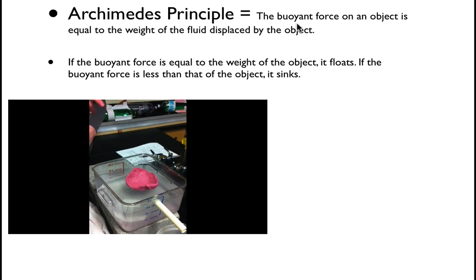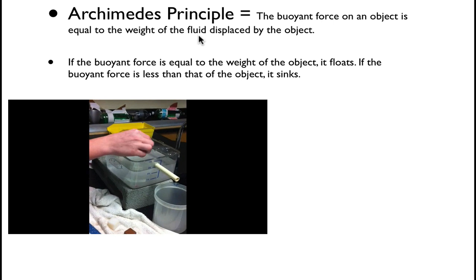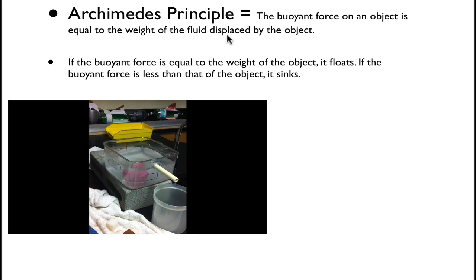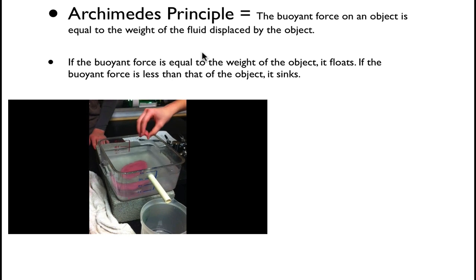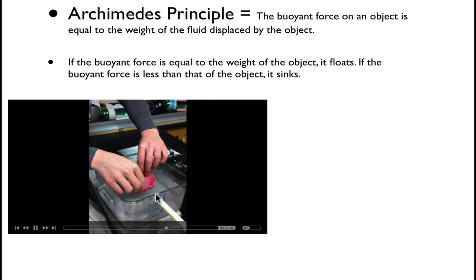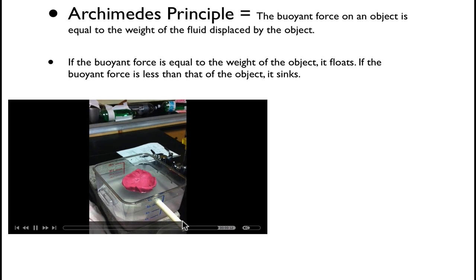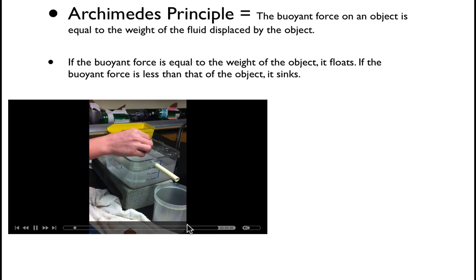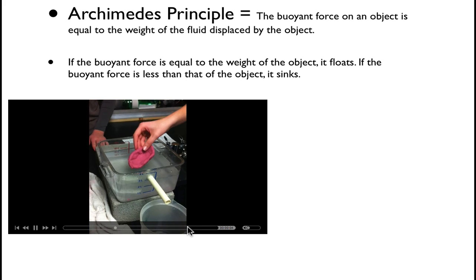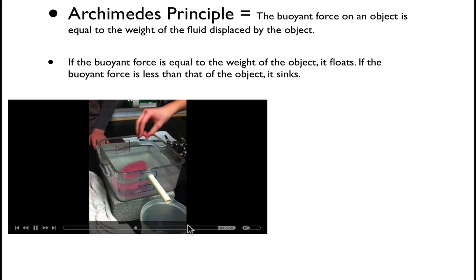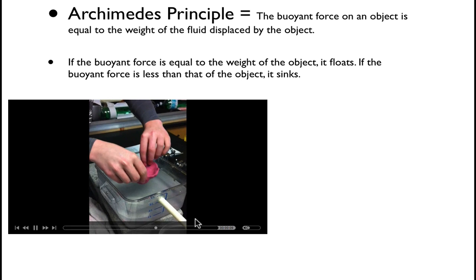So if we know buoyant force, then we find that by how much fluid the object displaces. So if we set an object in the water, it's going to push water out of the way. And you see this little tube here, we can actually let it drain out into this cup. And if we've measured how much fluid it actually pushed out of the way, that would be equal to the buoyant force. And so if it's less than the buoyant force, it floats. If it's more than the buoyant force, it's going to sink in that case.